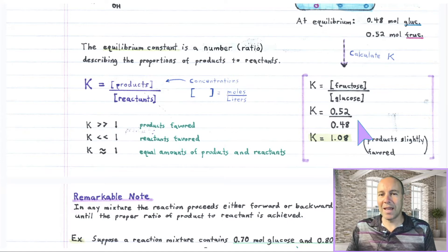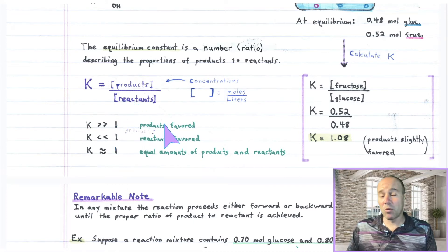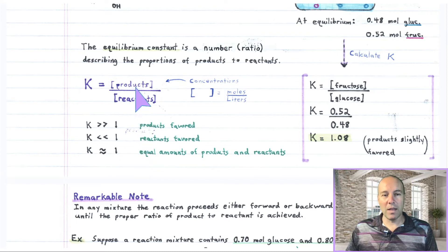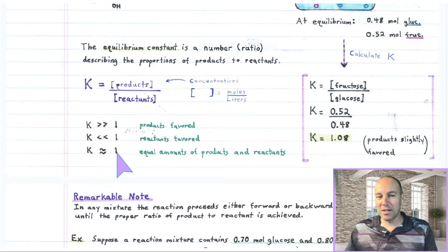When the equilibrium constant is bigger than 1, there are more products at equilibrium than reactants — the products are favored. This value is just a little bigger than 1, so products are slightly favored. If the equilibrium constant is less than 1, the denominator is bigger than the numerator, meaning reactants are favored. If it's about equal to 1, you have roughly the same amounts of products and reactants at equilibrium.